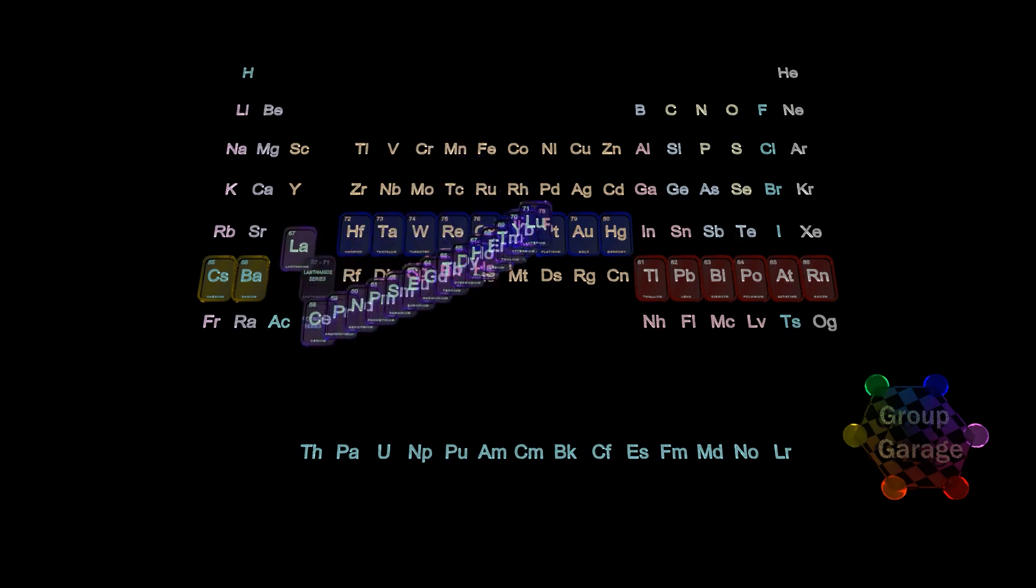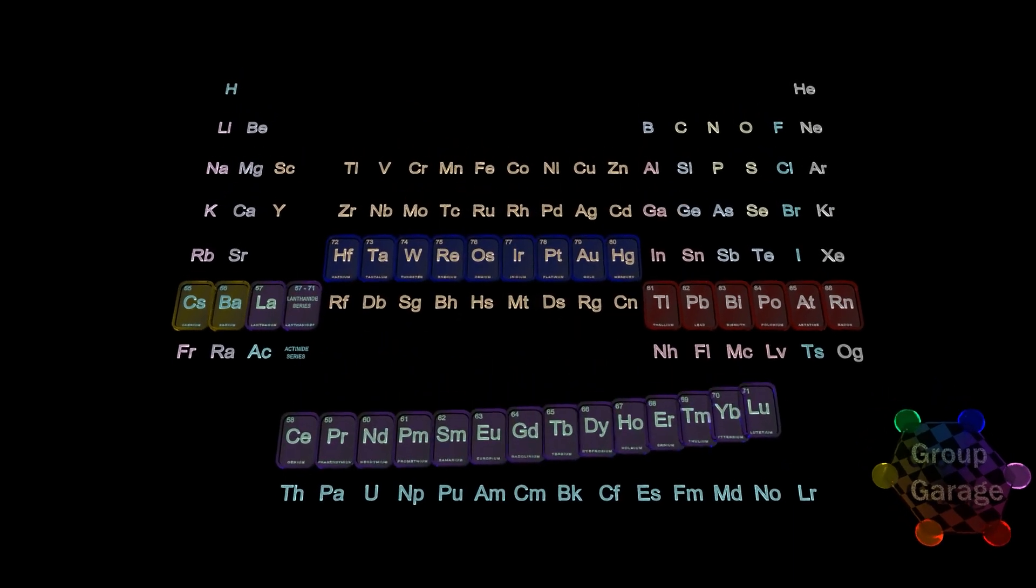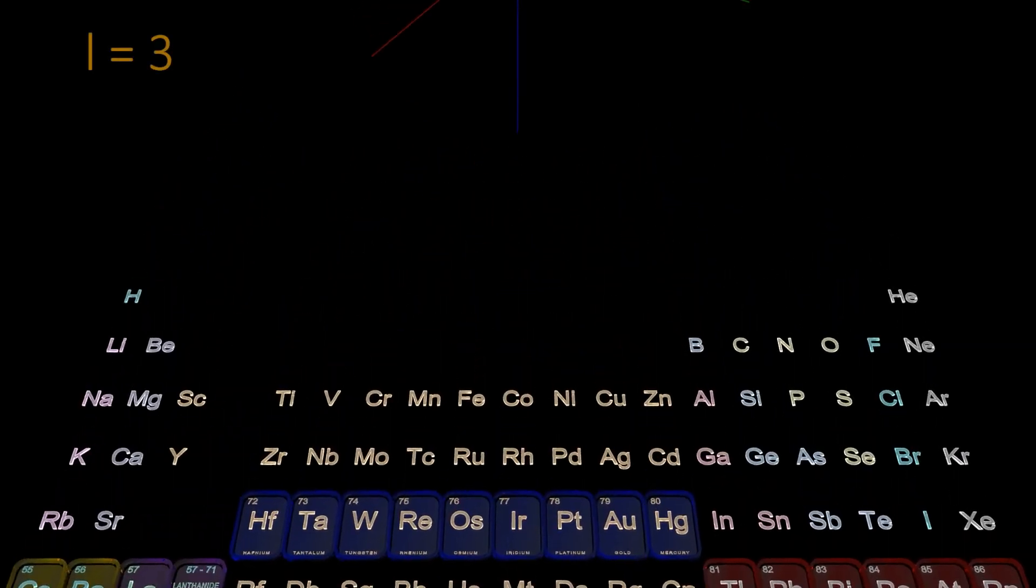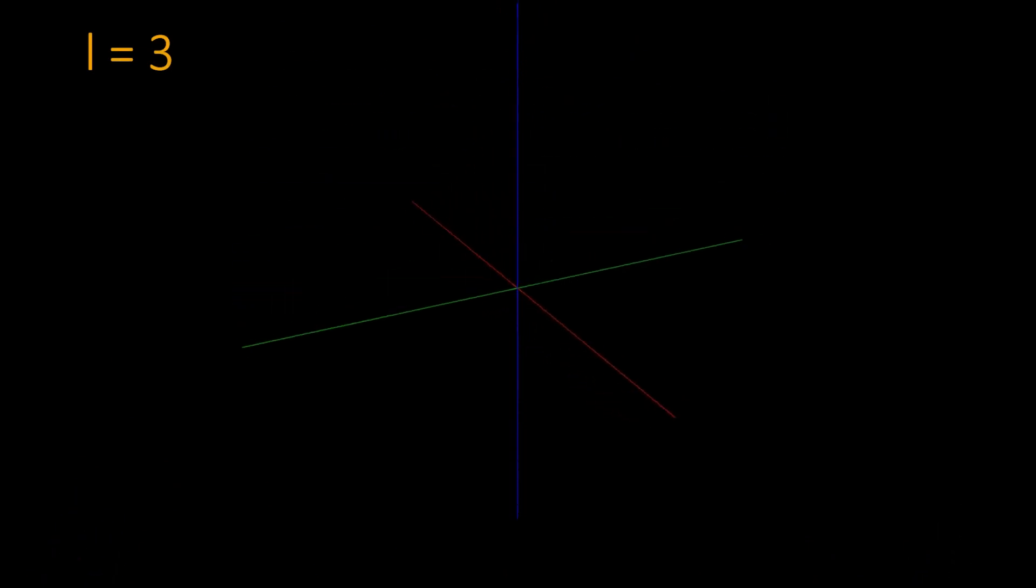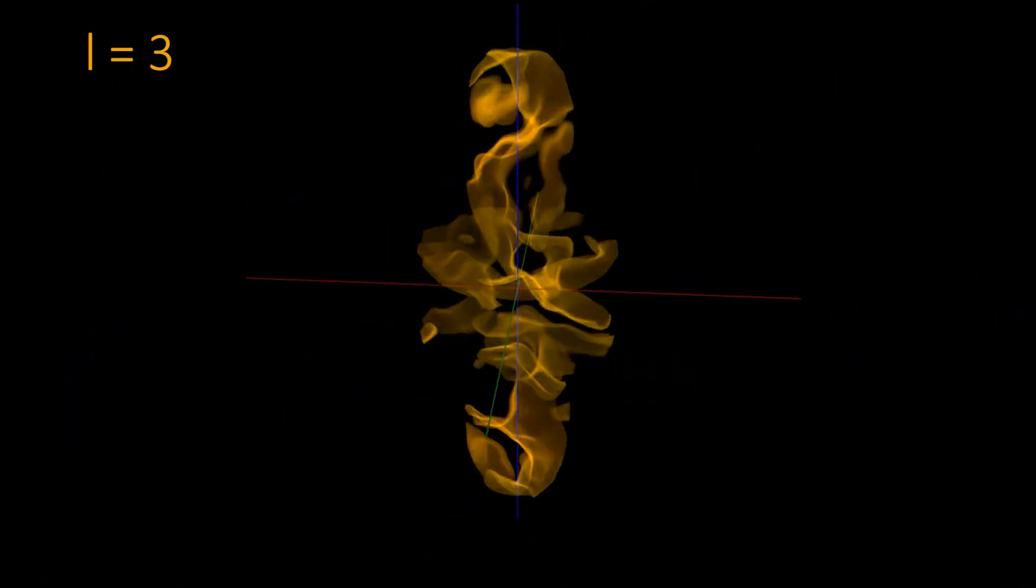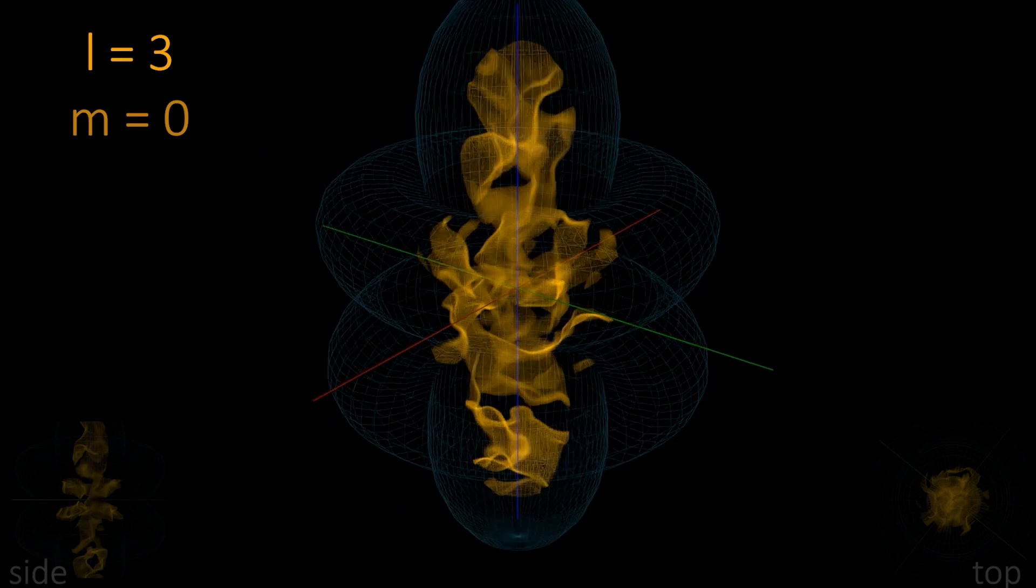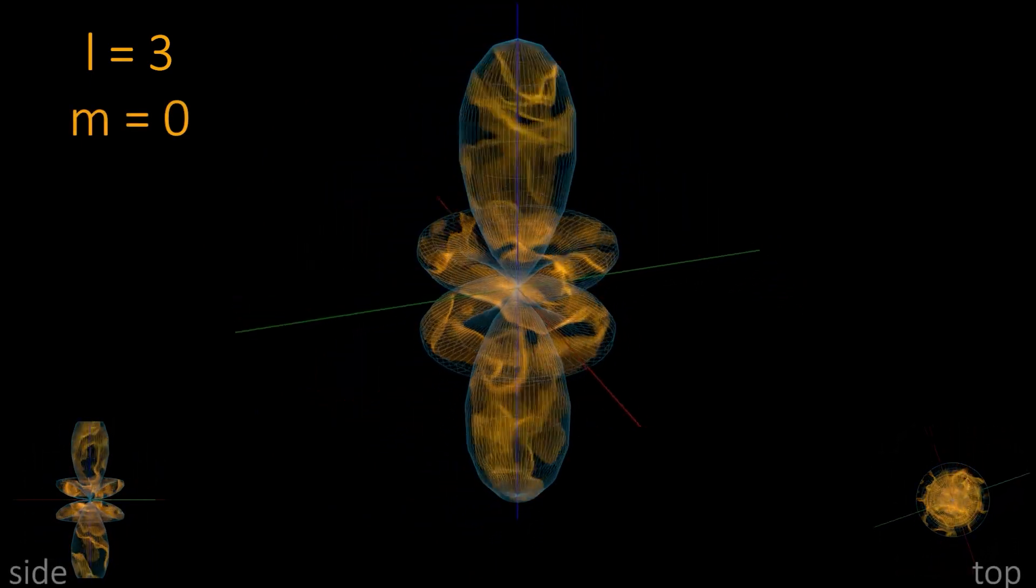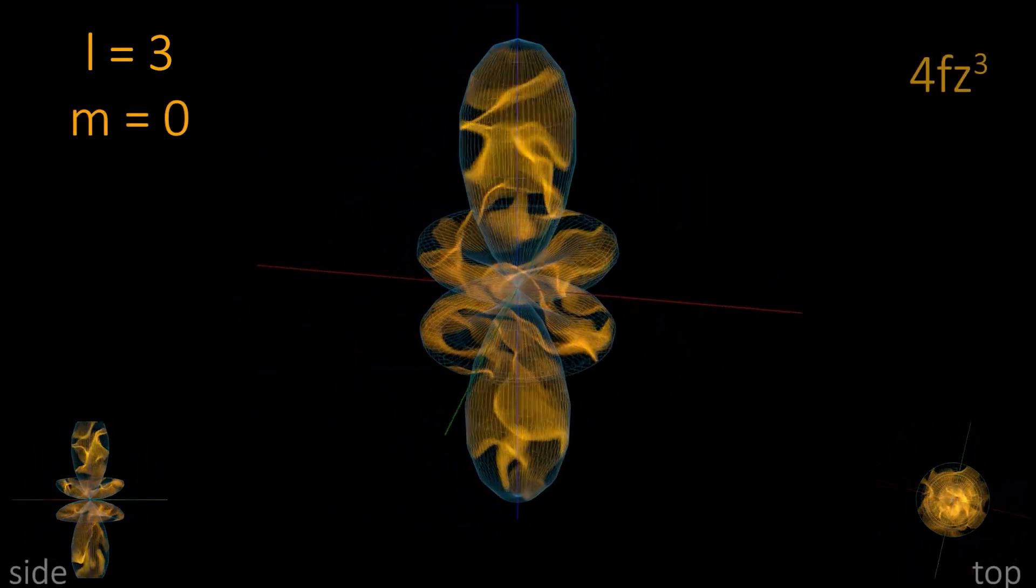With an idea of how the orbitals are filled, let's look at the orbital shapes with angular momentum L equals 3, the fundamental, or f orbitals. The first f orbital, we let the magnetic quantum number M equal 0. By convention, we call this 4fz cubed.